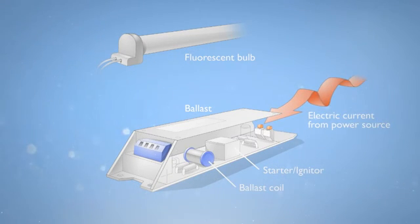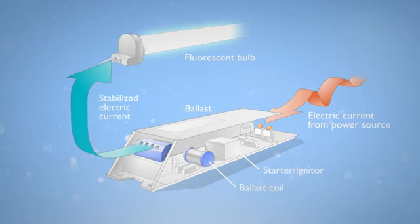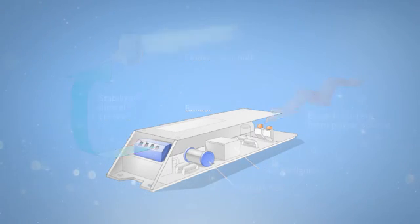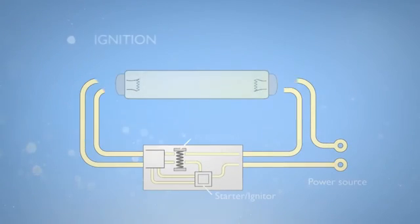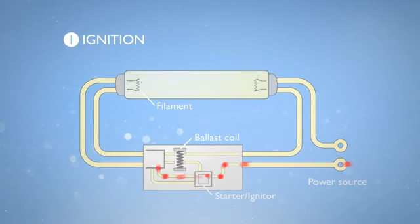The ballast is needed to stabilize the flow of current, or the bulb will quickly become inoperable. A ballast serves two purposes. One, it provides the proper voltage to a fluorescent bulb to establish an arc. That's what lights the bulb.